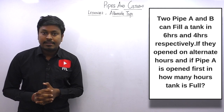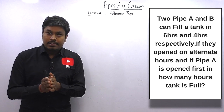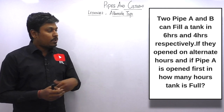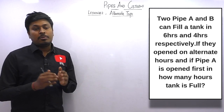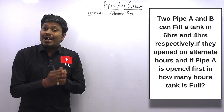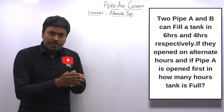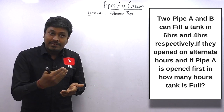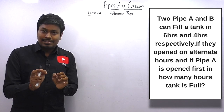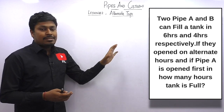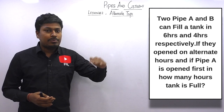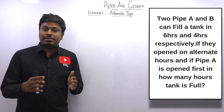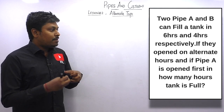Welcome to Lesson 2 on the topic Pipes and Cisterns. In this lesson we are going to solve five questions based on the concept called alternate taps. Lesson 1 was a basic introduction about pipes and cisterns, so from Lesson 2 we are going to solve important questions. If you look at any memory-based exam like bank exams, railway exams, or IT sector interviews, the major questions asked in previous years on pipes and cisterns were only from this alternate taps concept.